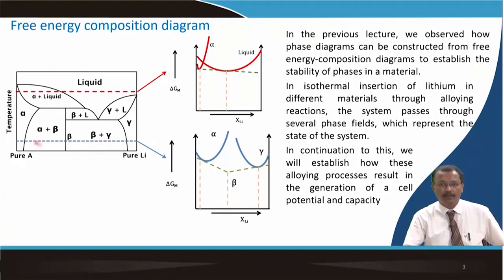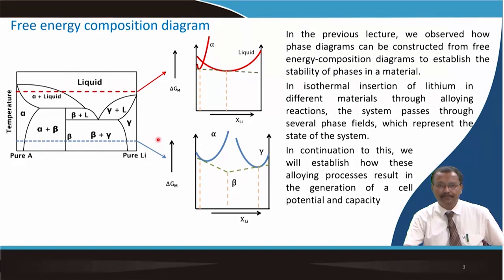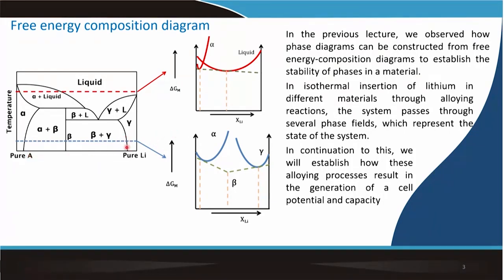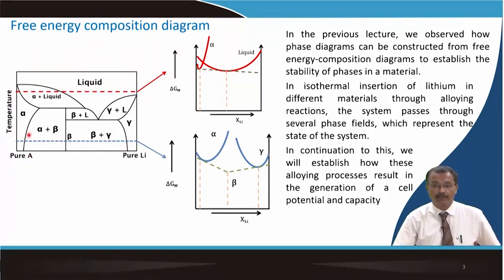One component is a pure element defined as A, and the other side is pure lithium. Sometimes in some of my slides, instead of A, I put X, and the right-hand side is always lithium. So lithium content increases here and forms various types of solid solution and mixtures. If you go by this particular red line, you end up with the free energy versus lithium diagram as already explained, and if you go by the blue line, that kind of free energy versus composition diagram can also be identified.